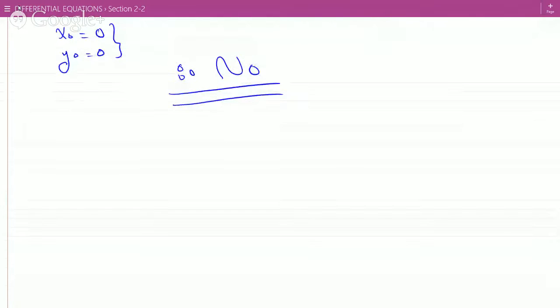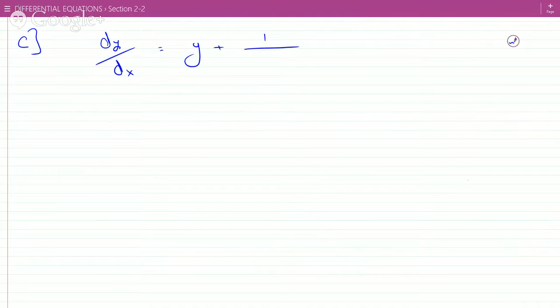How about, let's go to part c. So here we have dy over dx is y plus 1 over 1 minus x and the initial condition is y of 1 equals 0.